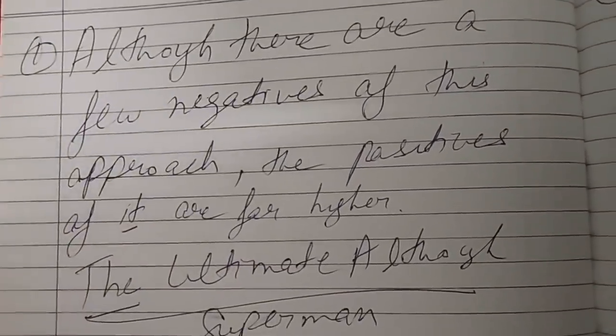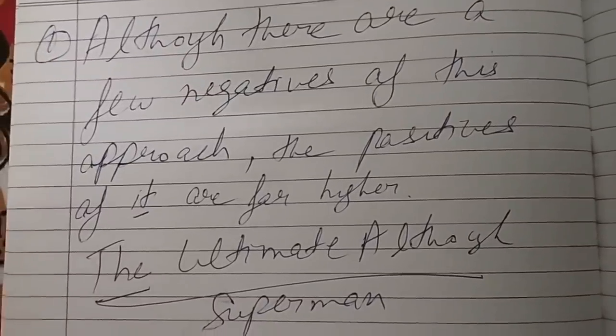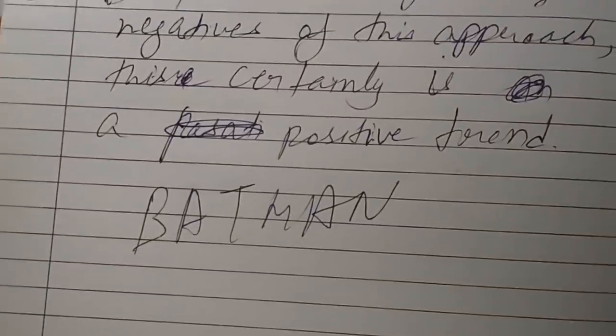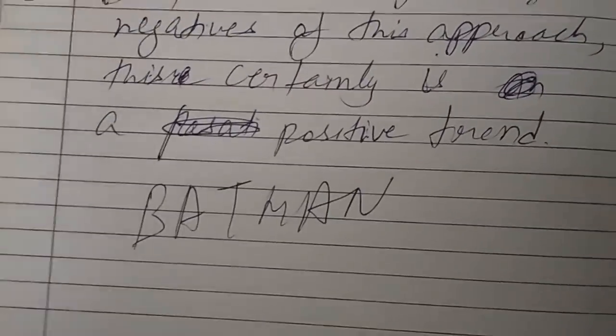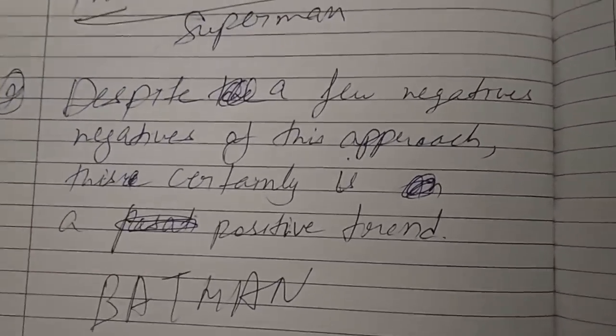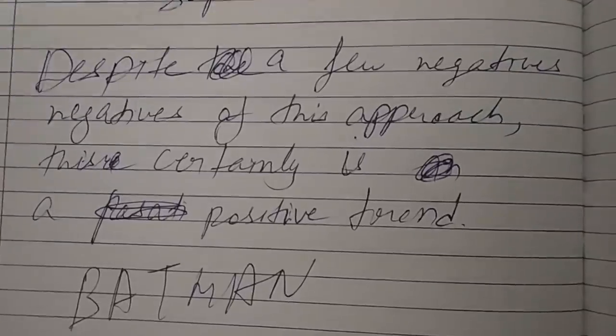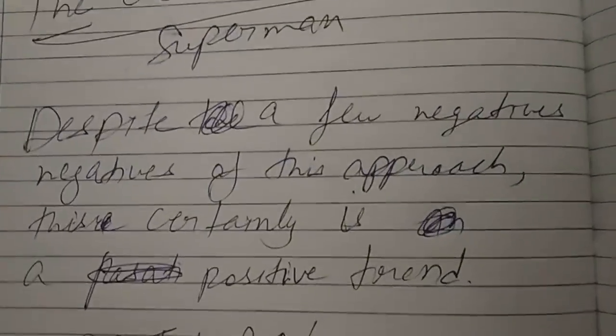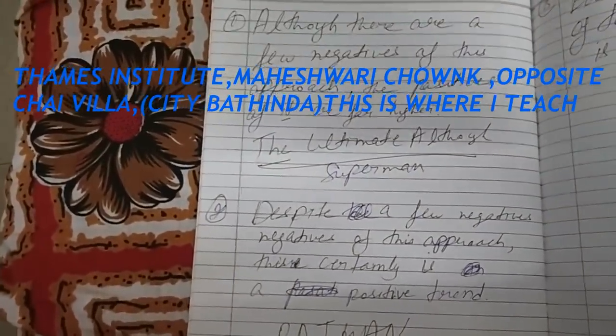There may be many negatives, but its positives are very, very high. This is already a very strong structure. 'Despite' — this is like Batman, one of the most powerful characters. 'Despite a few negatives of this approach, this certainly is a positive trend.' Both sentences have the same meaning. These two are very, very strong, and there is a third one as well.